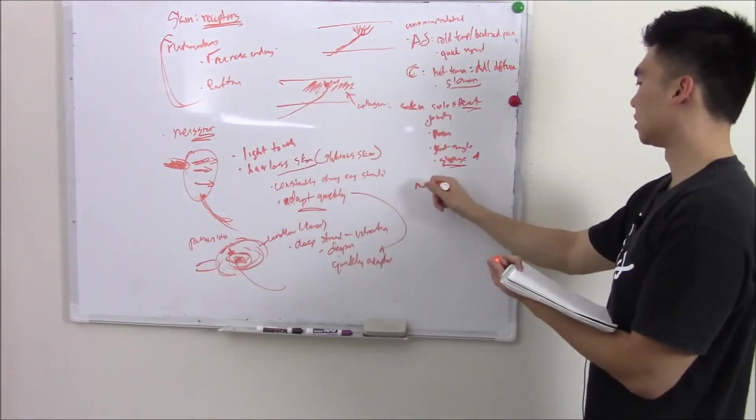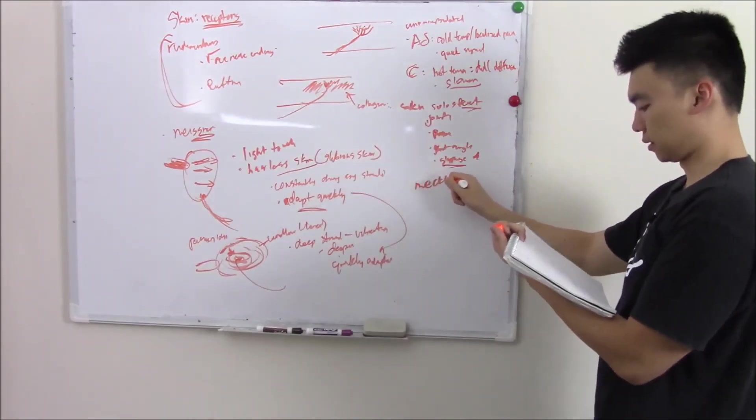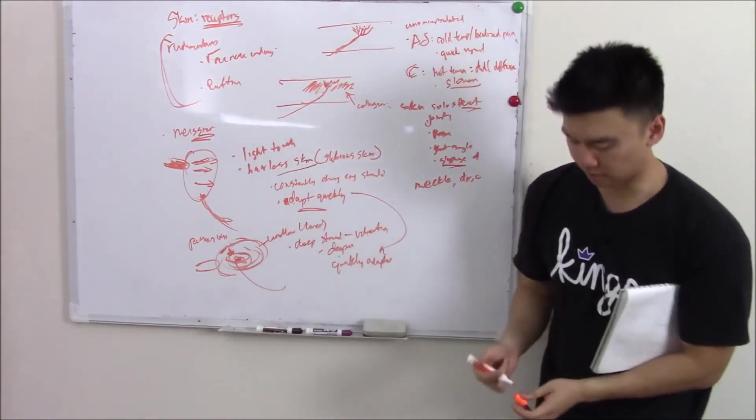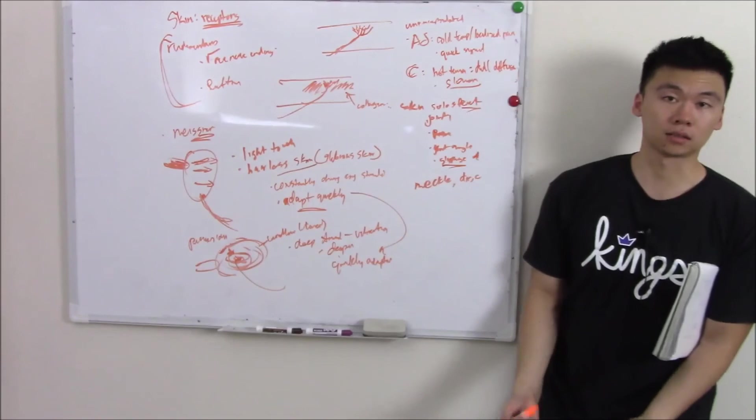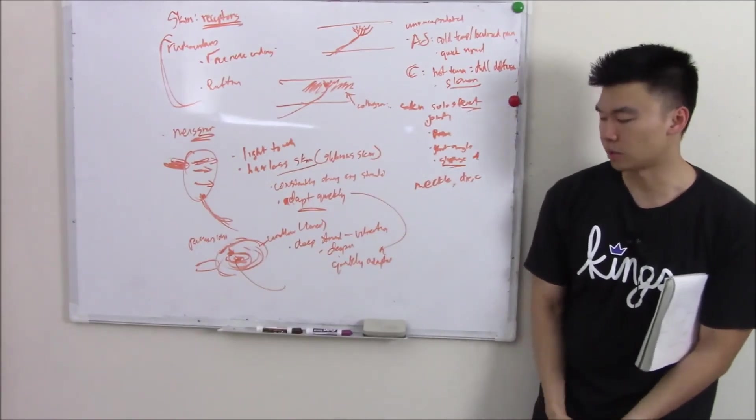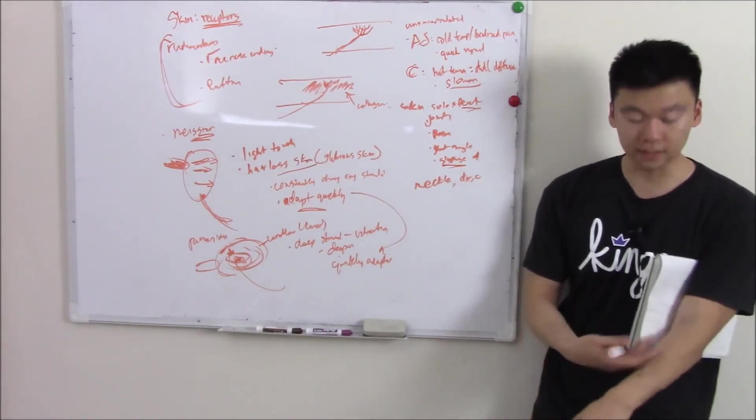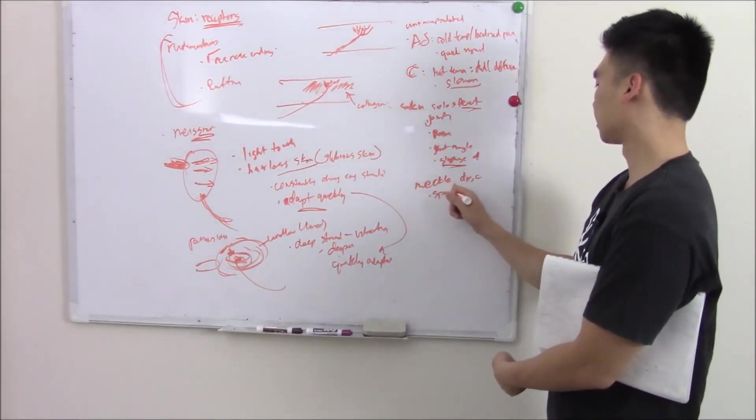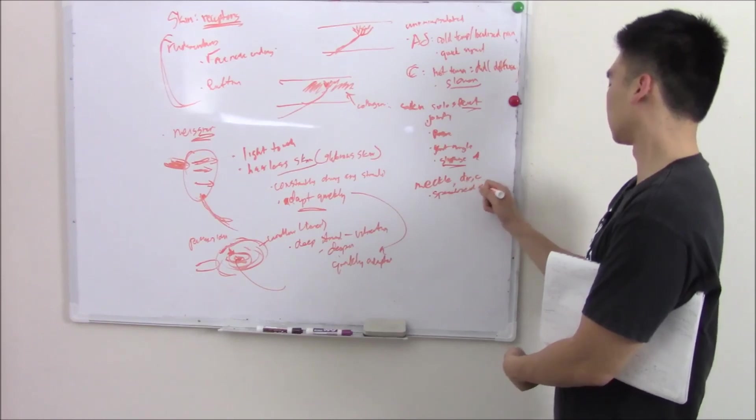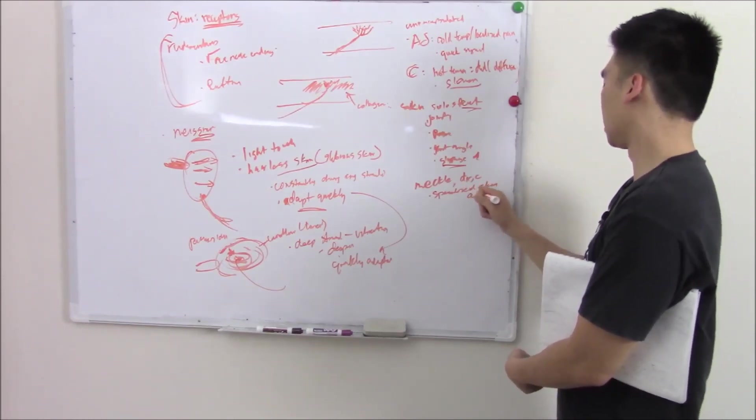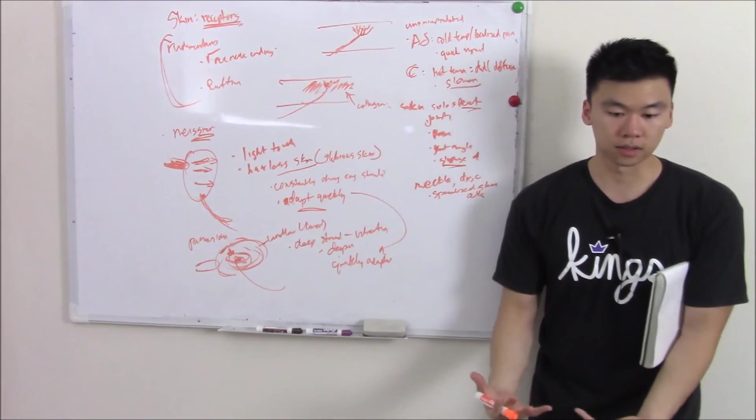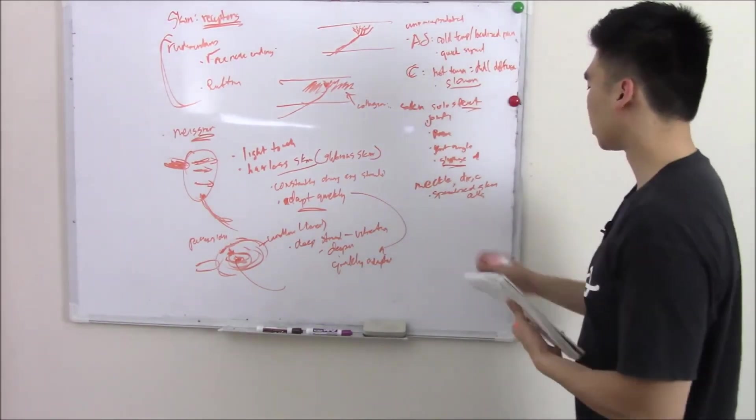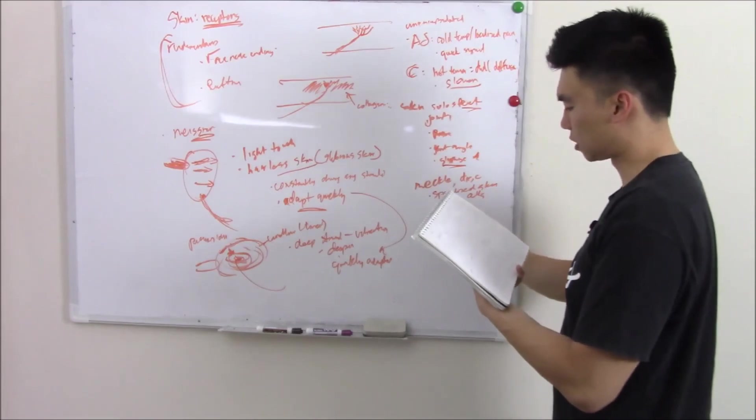Last but not least, Merkel's disc. Now Merkel's disc aren't really disc at all. They're cells. They're keratinocytes. If you remember from our dermatology block, keratinocytes are your skin cells. These are specialized skin cells. And most of your cells come from your basal layer, your epidermal basal layer. And this is no different. So this will be in your basal layer.